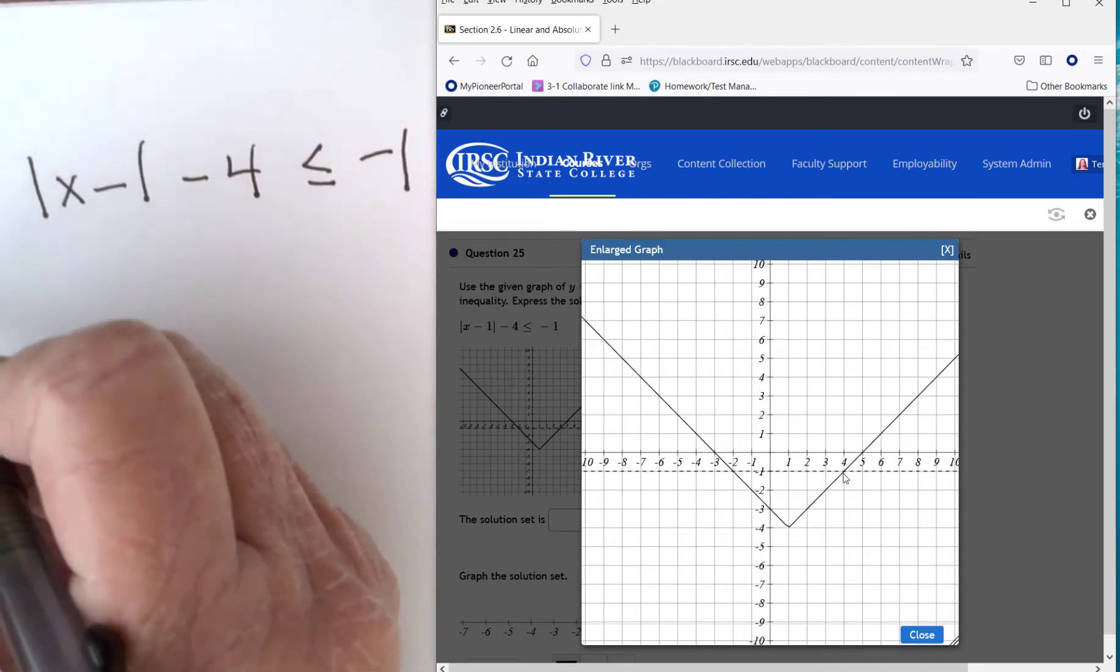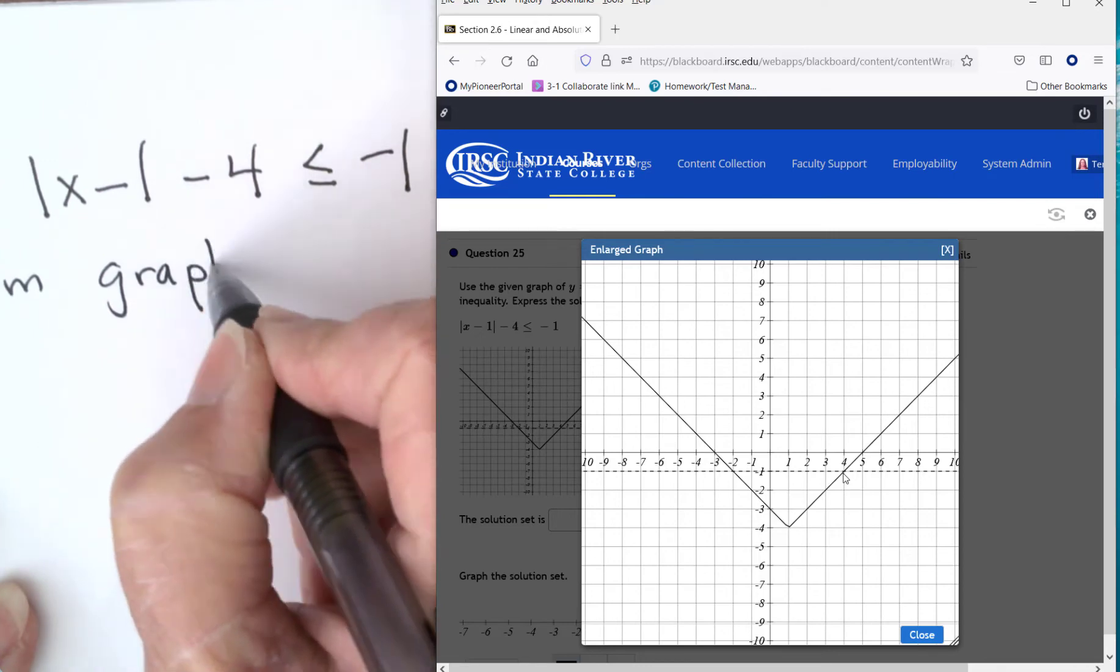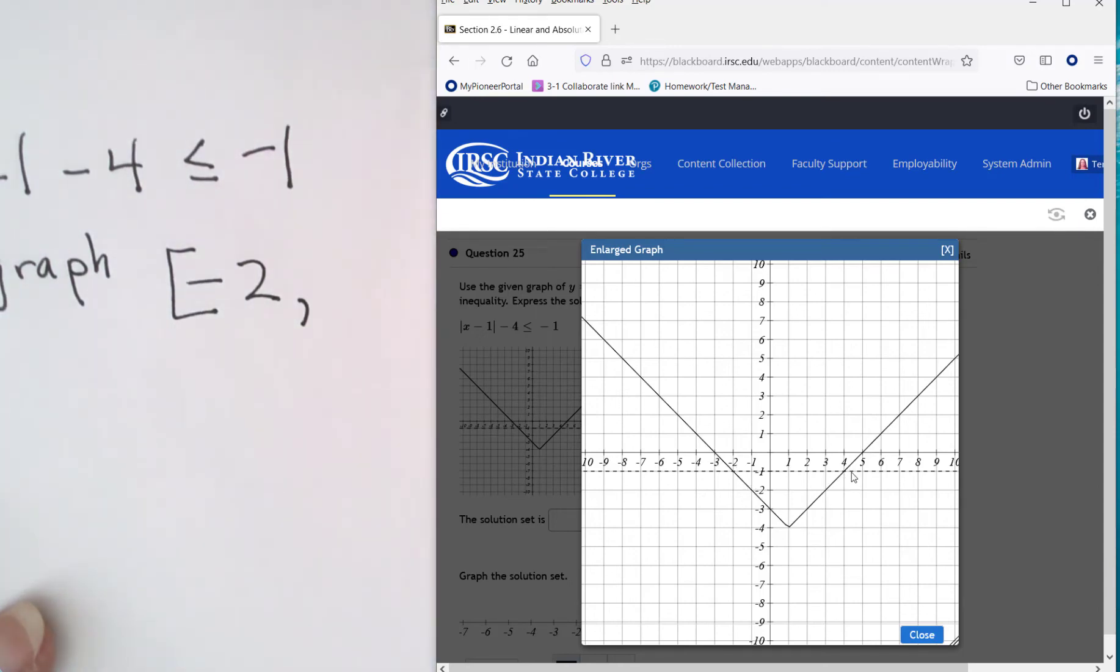Well from negative 2 to 4 is when it is below. So this is from the graph, negative 2 and we had an equals in that original inequality so we will use a bracket. From negative 2 to 4 that little piece is below the dotted line so that is where it's smaller than the other one.